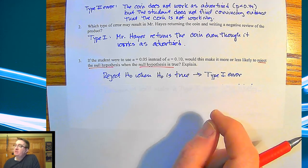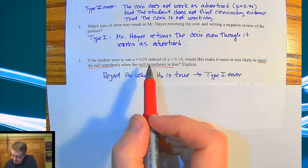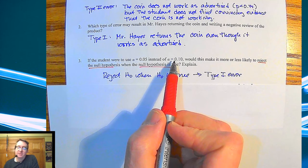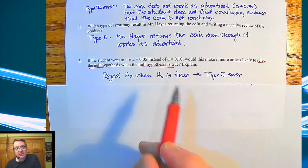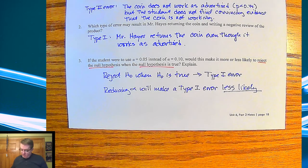Because again, remember we're saying what we're seeing purely by chance happens this much. That's our probability. This right here is saying that I will have that happen 10% of the time. Anything less than 10%, we're saying that's good enough. This is saying it has to be under 5%. And so because of that, reducing our alpha value will make a Type I error less likely.